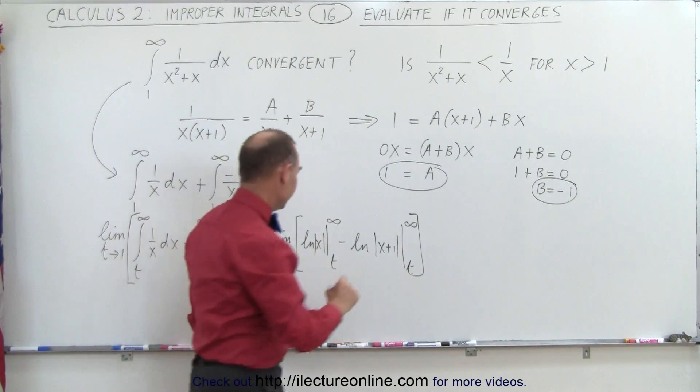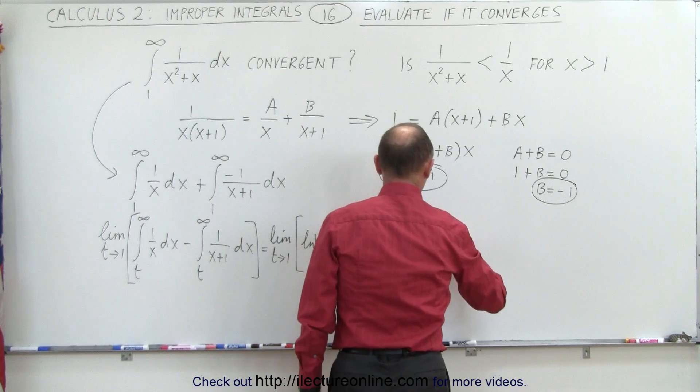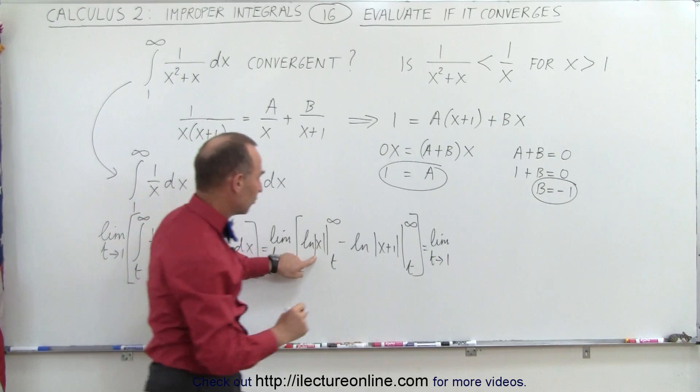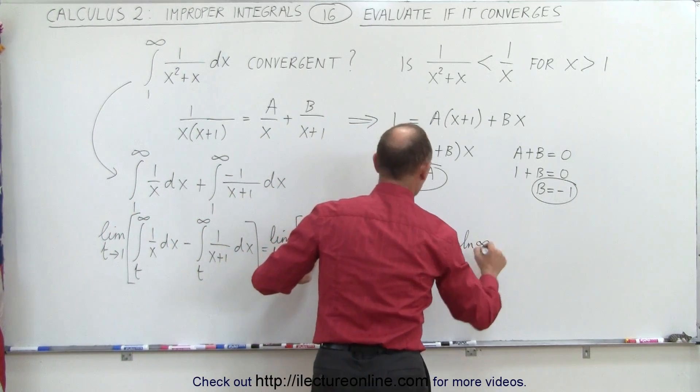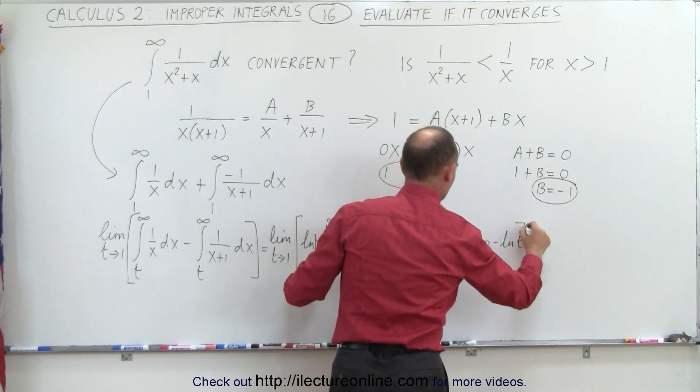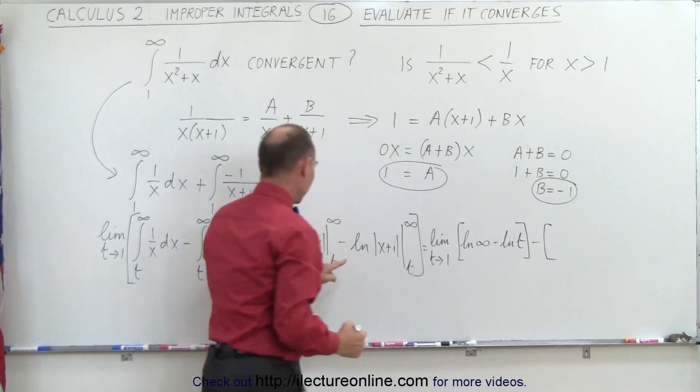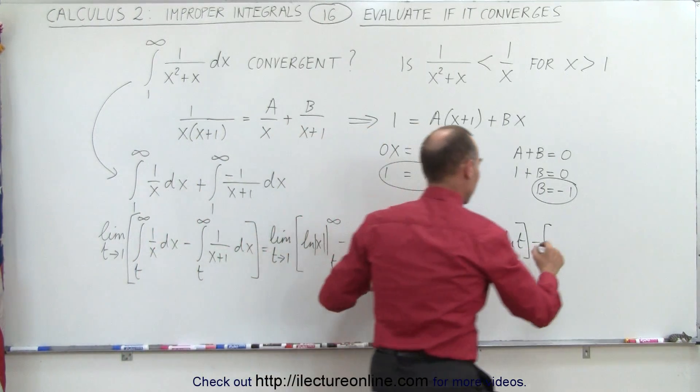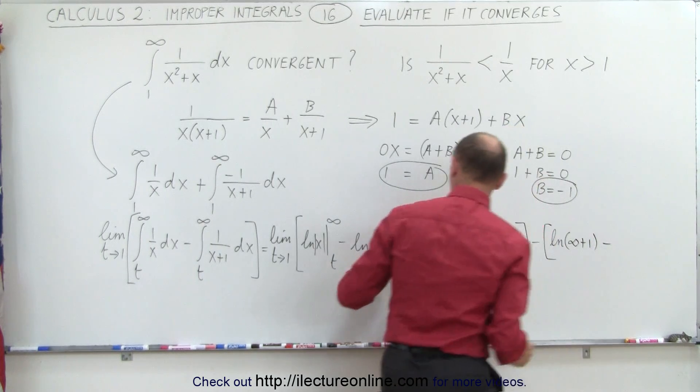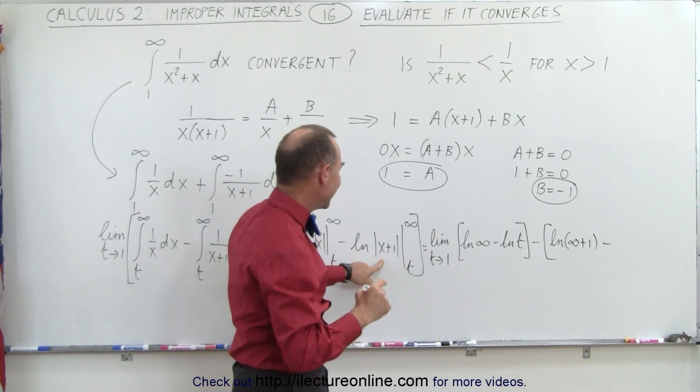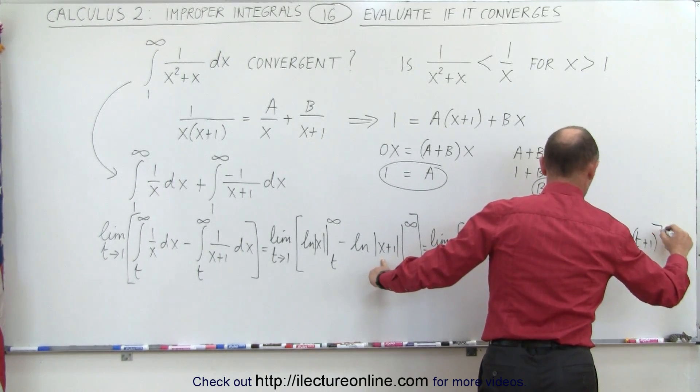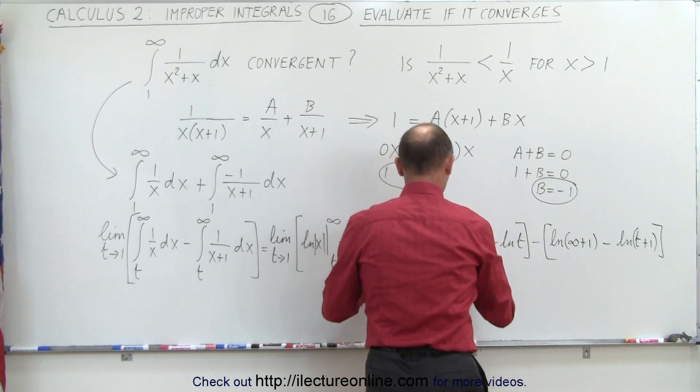Let's plug in the limits and see what we get. We get the limit as t goes to infinity of, first we plug in the upper limit here, we get the natural log of infinity minus the natural log of t minus the natural log of infinity plus 1 minus the natural log of t plus 1.